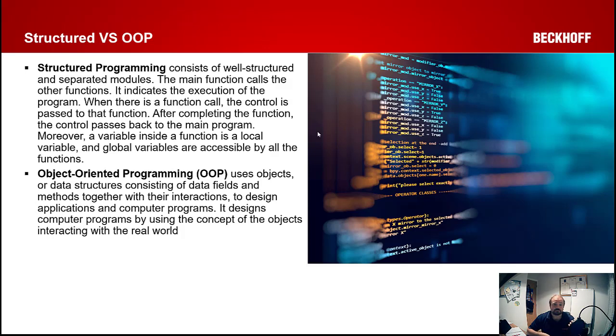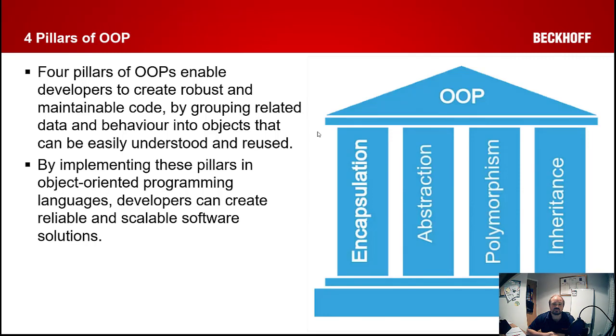The object-oriented programming paradigm uses what was first called the four pillars of OOP, which enable you to create robust and maintainable code. By implementing these you will be able to make much more reliable and scalable software solutions.